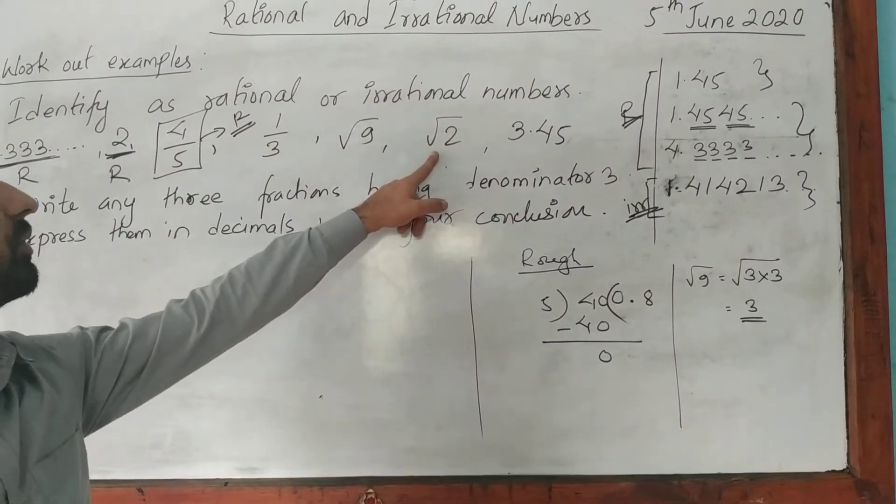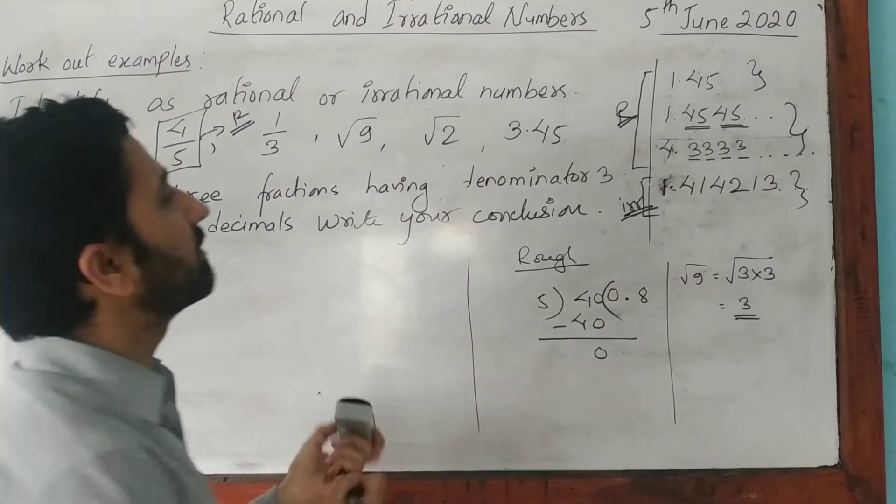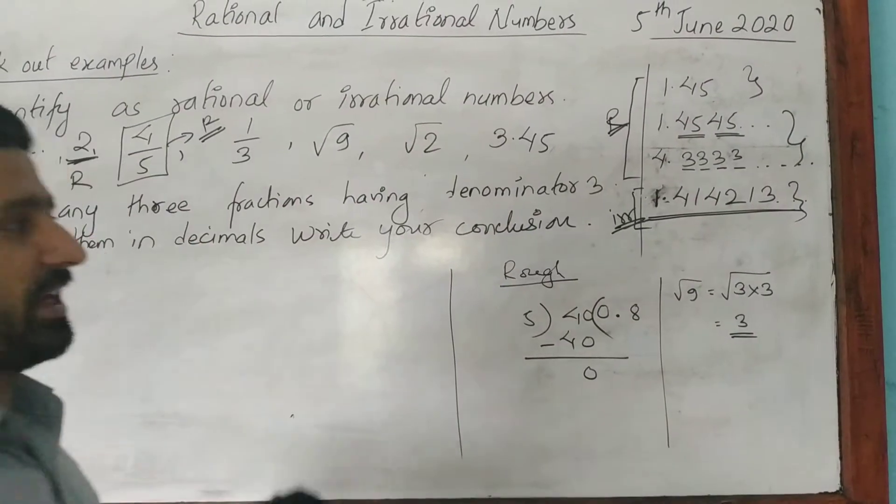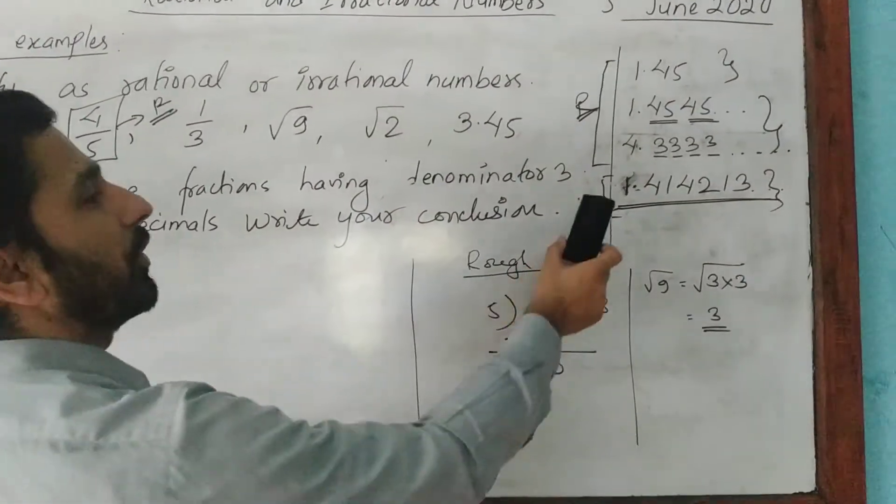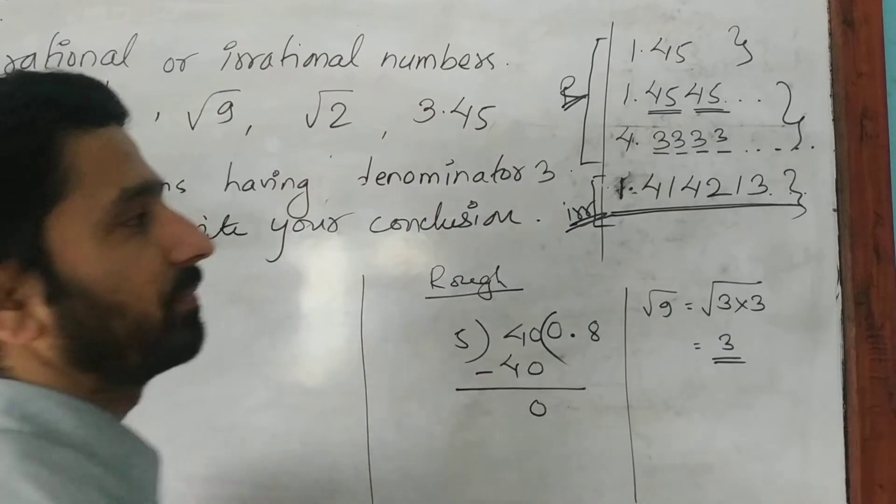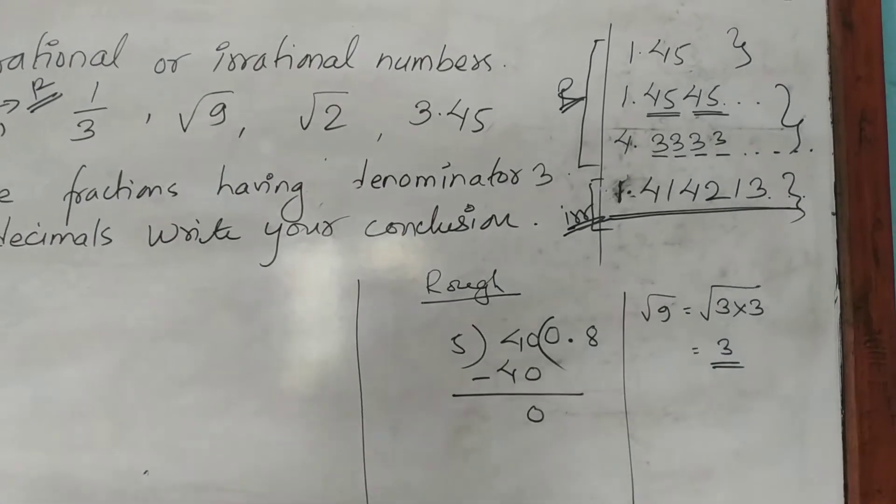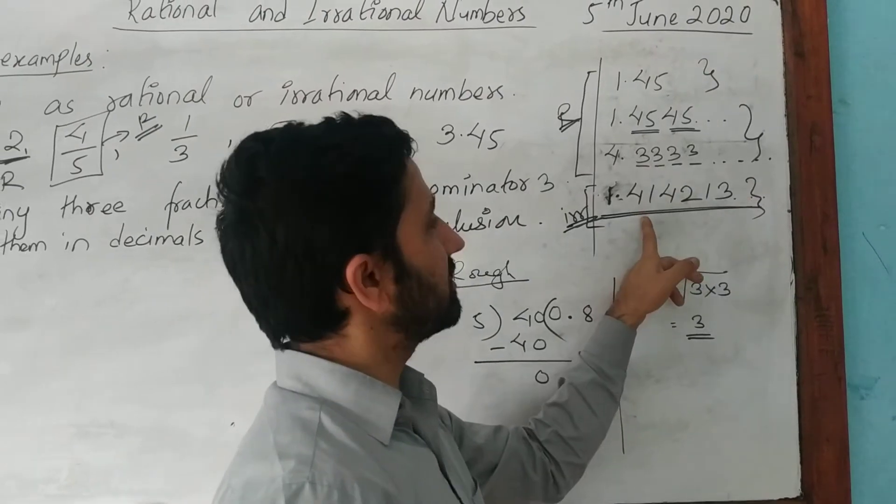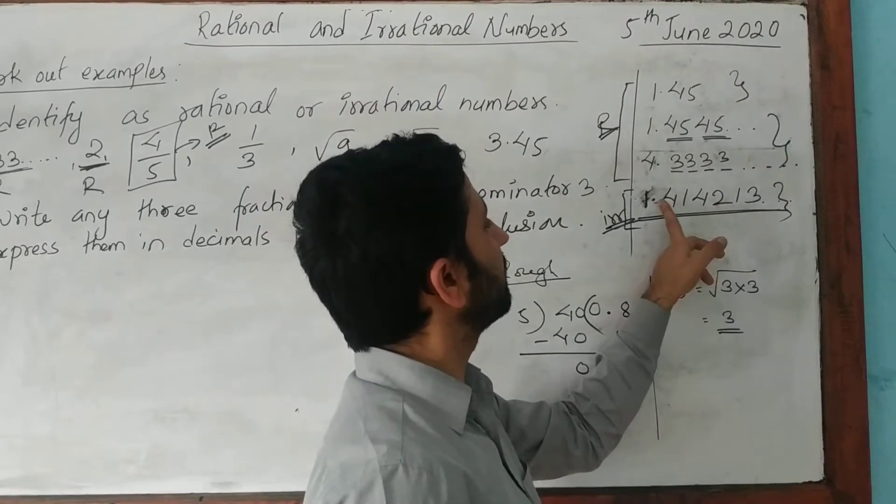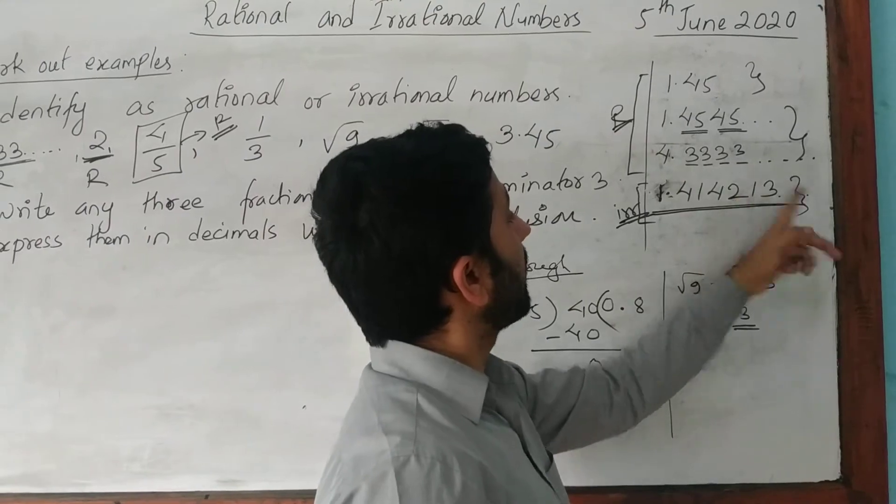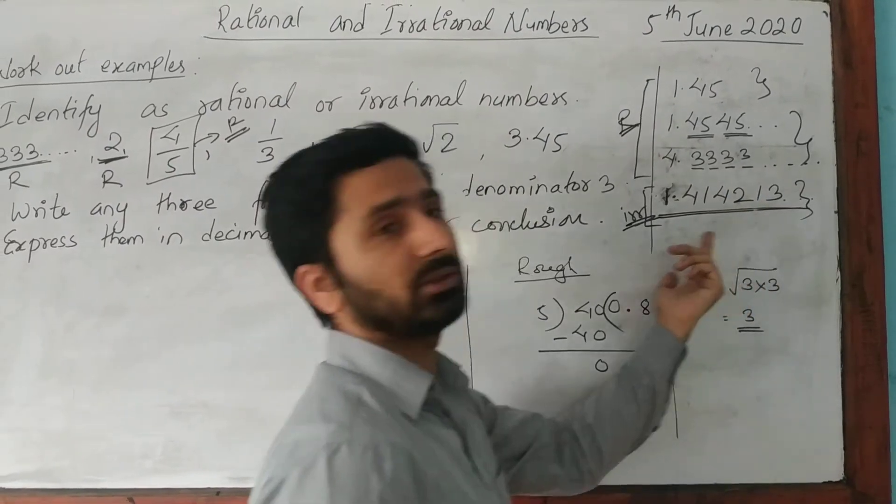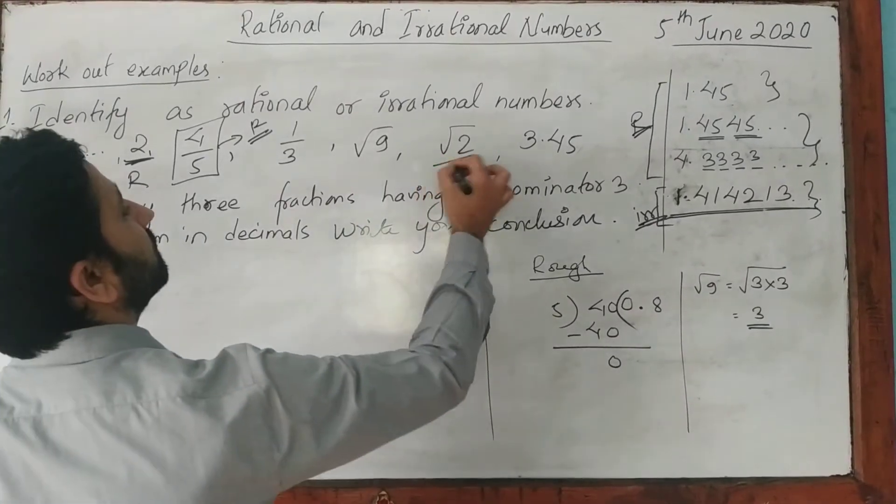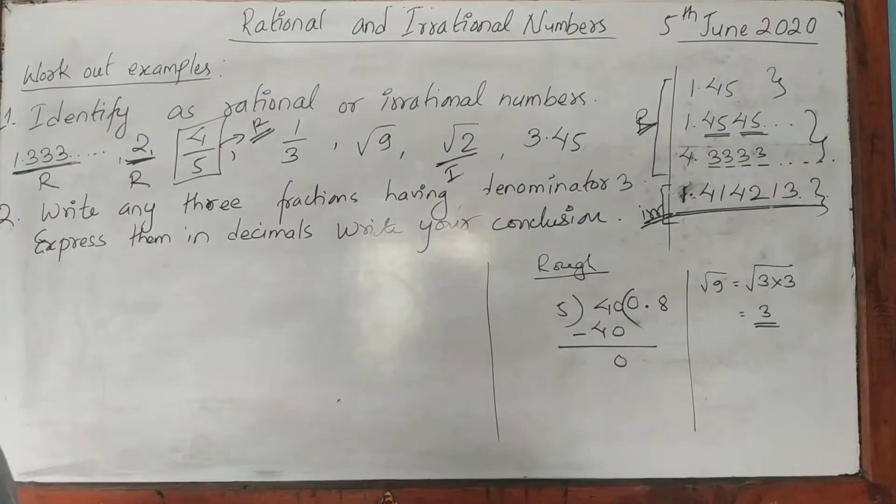In case of root 2, we have to know the value of root 2. Here I have written the value of root 2. Actually, this is root 2. That means root 2, 1.414213. That means the number is non-terminating and is non-recurring. Look, the same digits are not recurring. Here if it's 4, 1, then it's 4, 2. Now again it is 1, 3. The digits are non-recurring. That means root 2 is an irrational number.